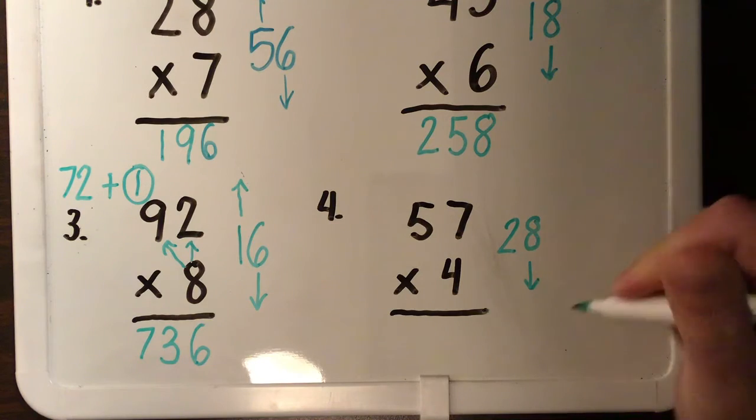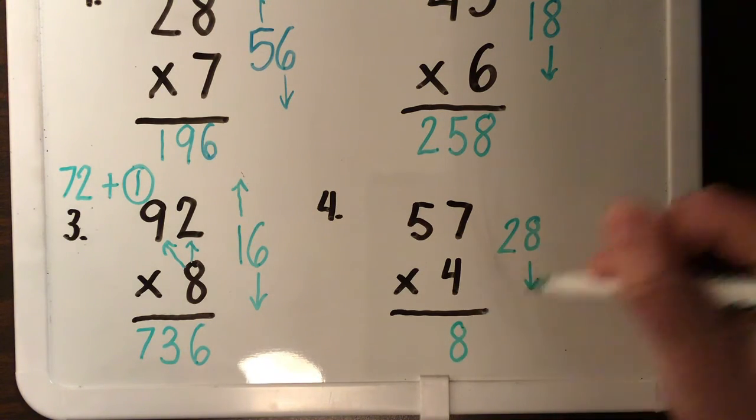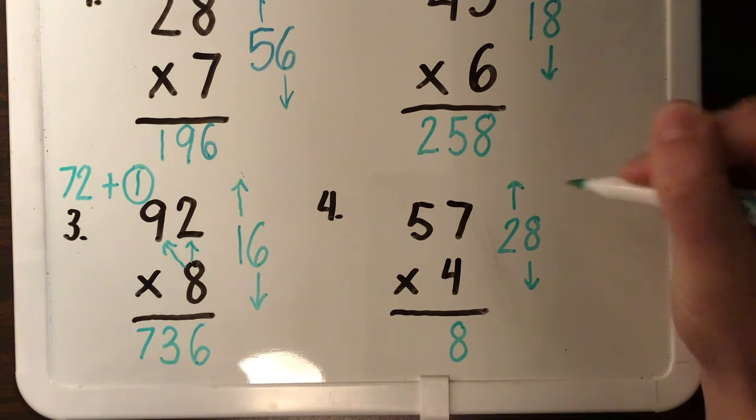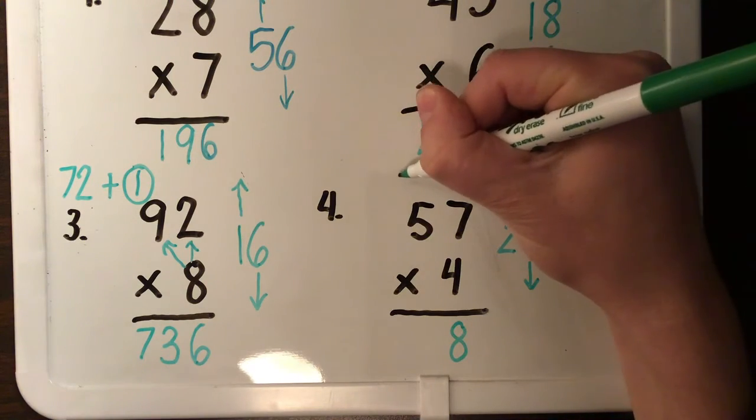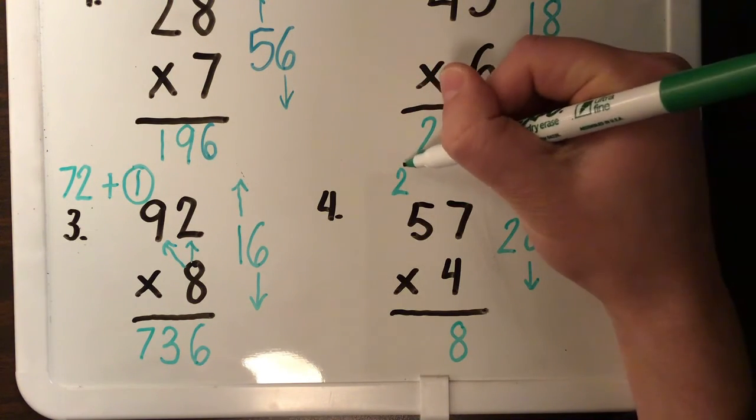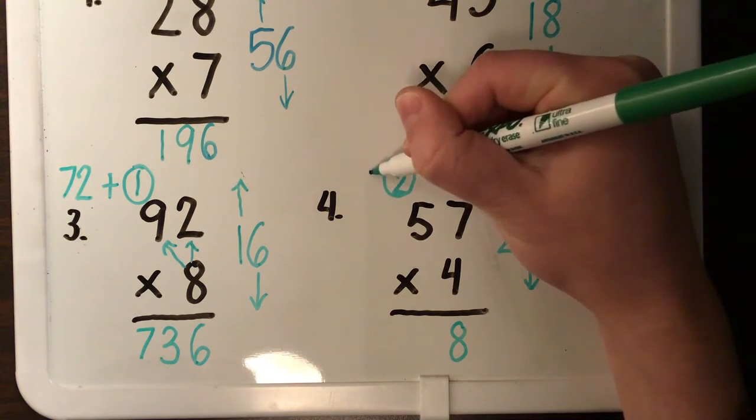I bring down my ones. I bring up my tens. My two comes over here. I circle and I plus it.